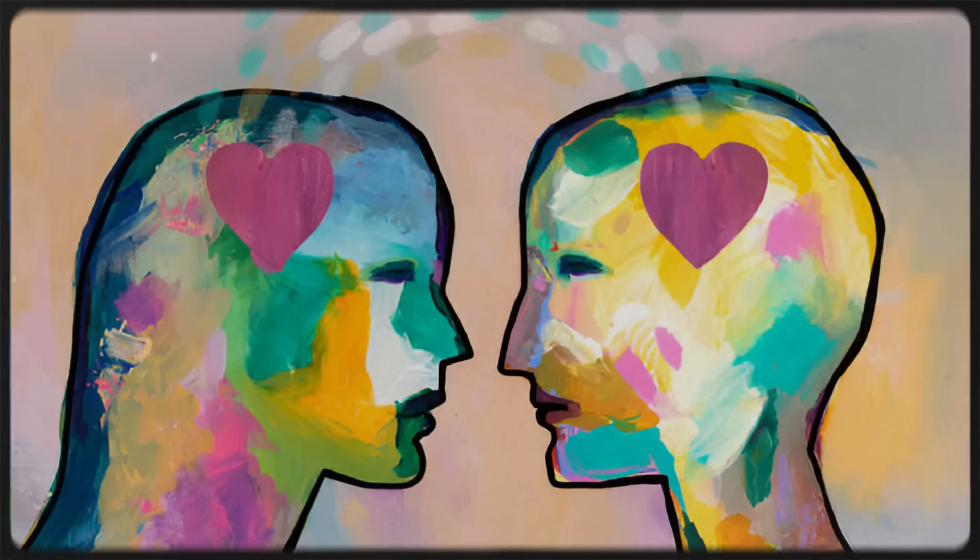In fact, studies show that when people spend more time with someone, their attraction to that person can grow, even if they didn't find them attractive at first. It's called the slow burn effect, and it proves that emotional connections can rewire your brain's perception of someone.